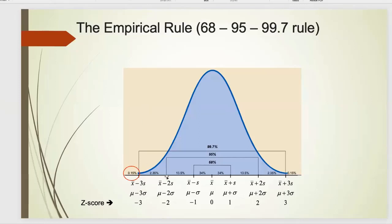About 68% of observations are going to be within one standard deviation. On the bell curve diagram, between z = -1 and z = +1, the area in the middle is about 68%. For 95%, about 95% of observations are between minus two and positive two. And 99.7% — fairly close to 100% — means almost all observations are between minus three and positive three.